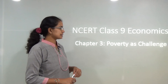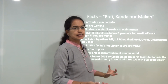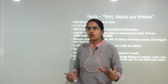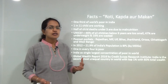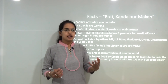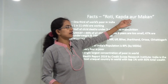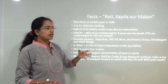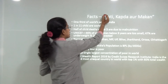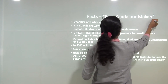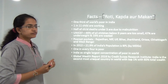We will start with the next chapter for economics, that is Chapter 3: Poverty as a Challenge. In layman's language, poverty varies from country to country, but in simple terms, the availability of the basic three amenities — roti, kapda and makan, that is food, shelter and clothing — are the essential parameters for any individual. India has a huge population which lives below the poverty line.